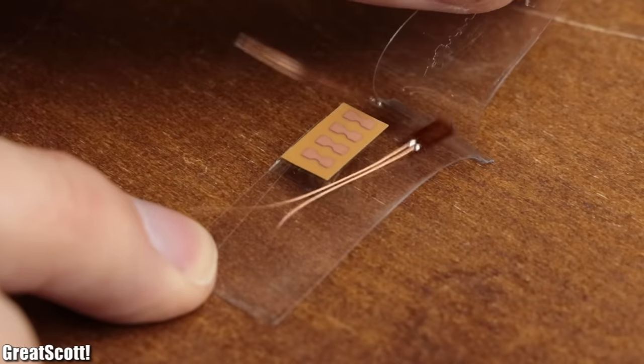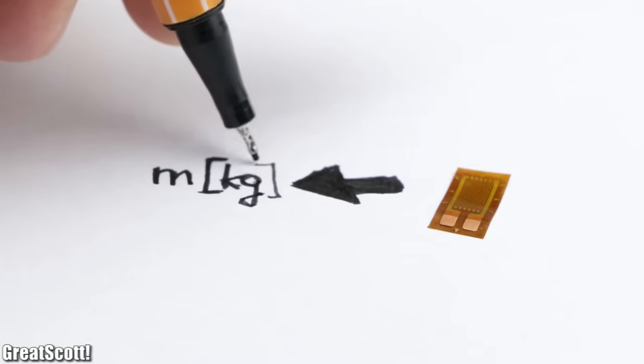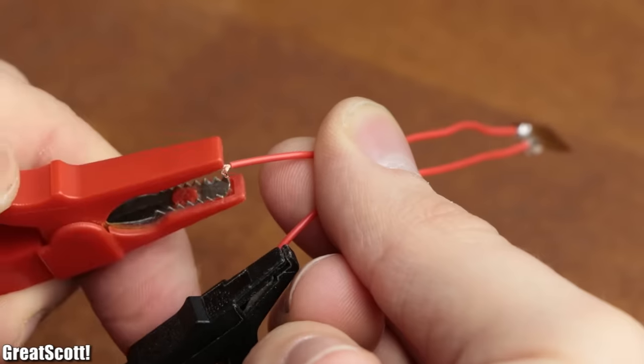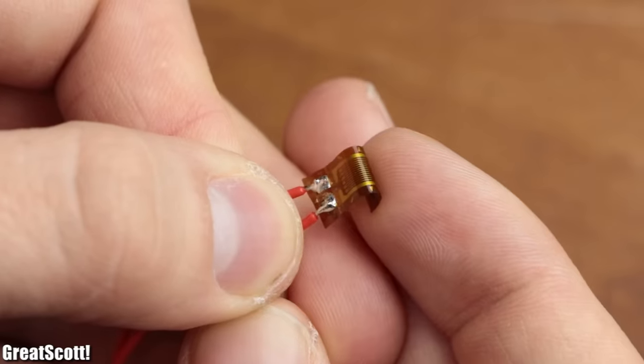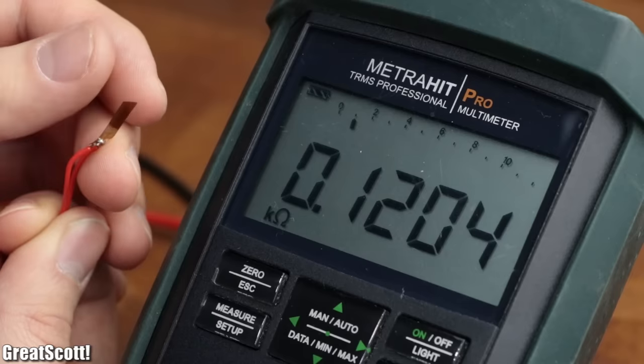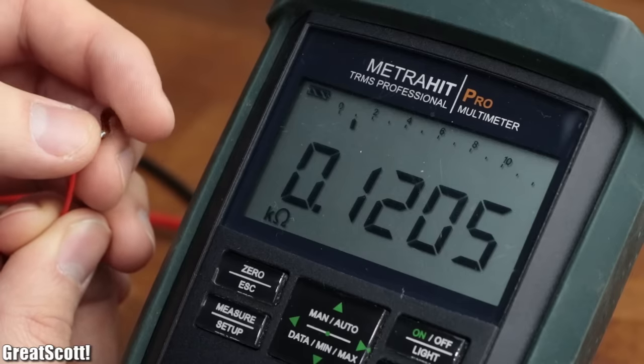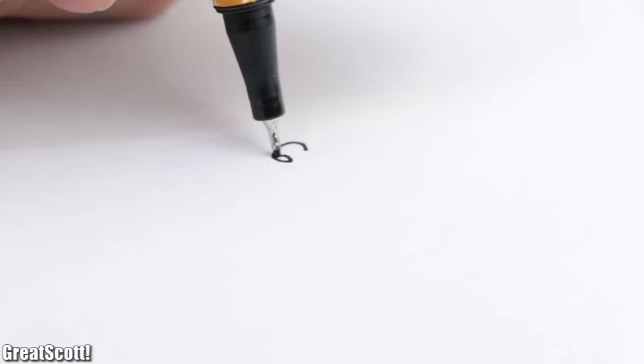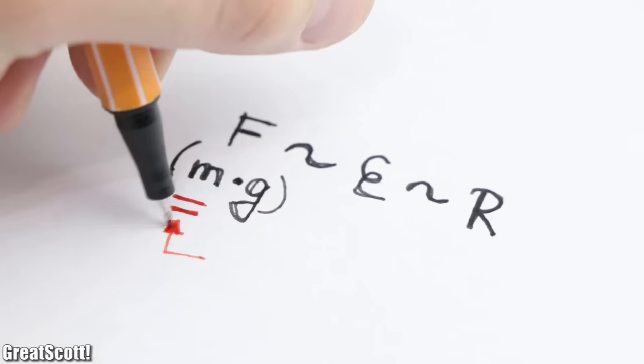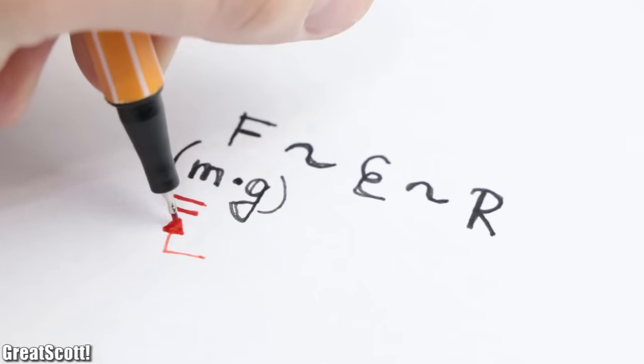But enough about the outer appearance. Let's rather find out how a piece of plastic can measure weight. And the answer is actually quite simple: by stretching or compressing the strain gauge, the resistance of its wire pattern increases or decreases slightly.